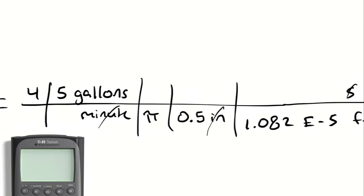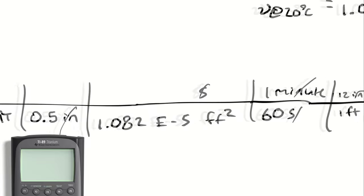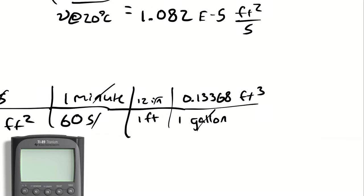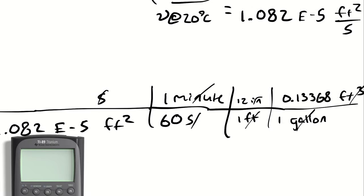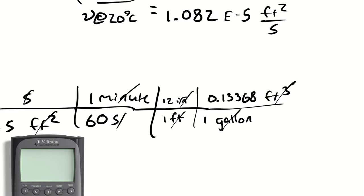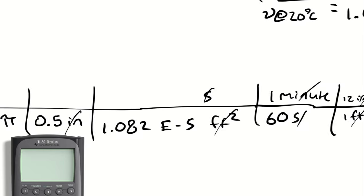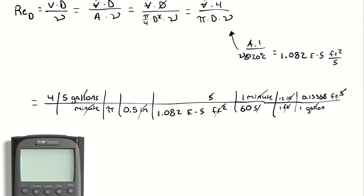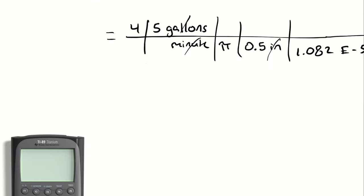Gallon cancels gallon. Cubic feet cancels feet and square feet. That means I'm left with a unitless proportion at the end, which is what I want.